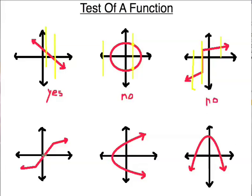Let's go to this next one. Drawing a vertical line here passes the test, here passes, and over here passes. I can't make this one fail the vertical line test anywhere I try. So I have to say yes, it's a function.